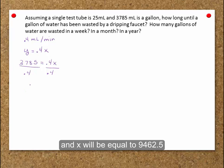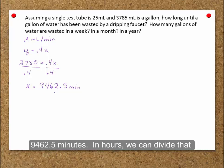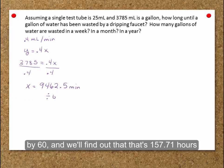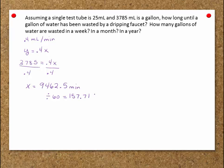So x will be equal to 9,462.5 minutes. So one gallon will take 9,462.5 minutes. In hours, we can divide that by 60, and we'll find out that that's 157.71 hours.